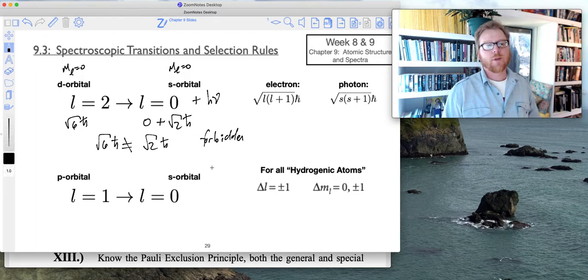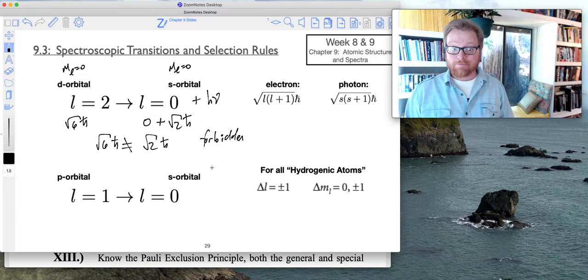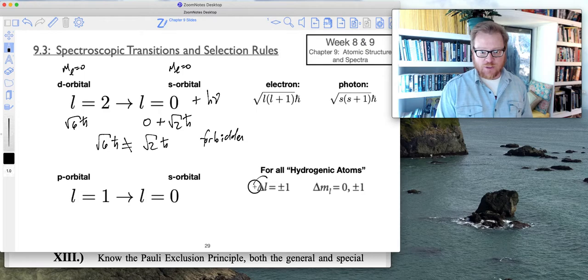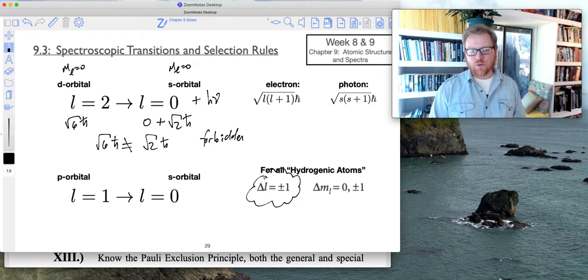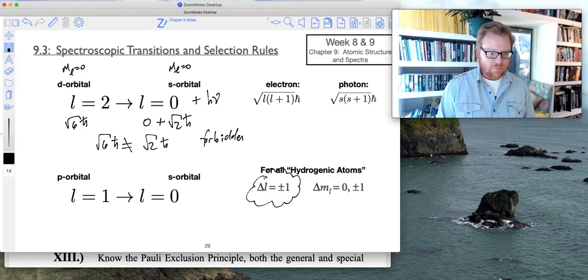We can't go from a d orbital to an s orbital, can't be done. And that gives us our first selection rule for all hydrogenic atoms. We're really meaning the simple atoms. We can't do an l=2 to l=0.